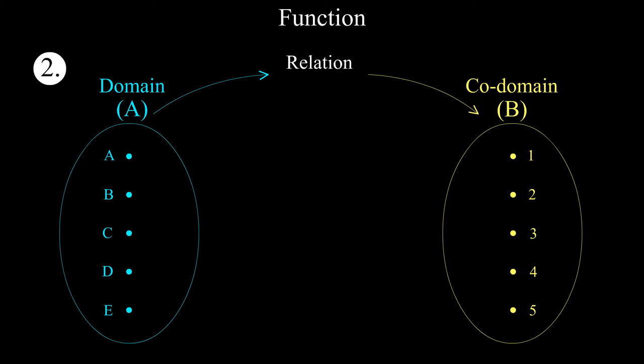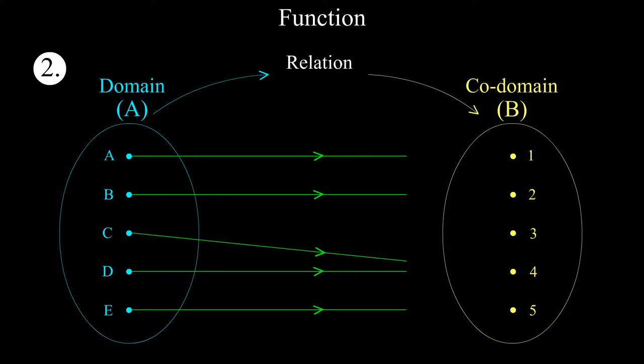See the second case. Here also each element of domain is mapped uniquely with elements of codomain. In other words, we can say that for each element of domain there exists only one element in its codomain.